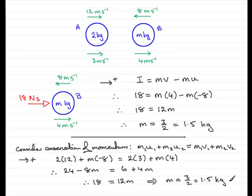So you have two methods then of solving this problem, either by considering the impulse force acting on B or by considering the conservation of momentum.